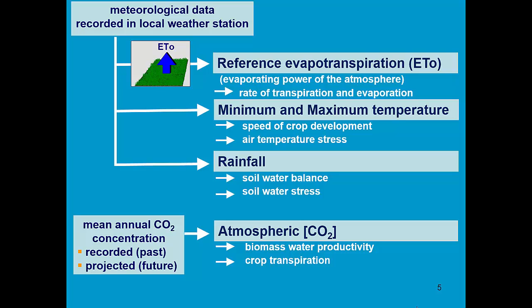Finally, AquaCrop also requires the mean annual CO2 concentration, because it affects the biomass production and the crop transpiration. It can consist of recorded past concentrations or also of projected future concentrations. These are useful when we want to simulate climate change scenarios.